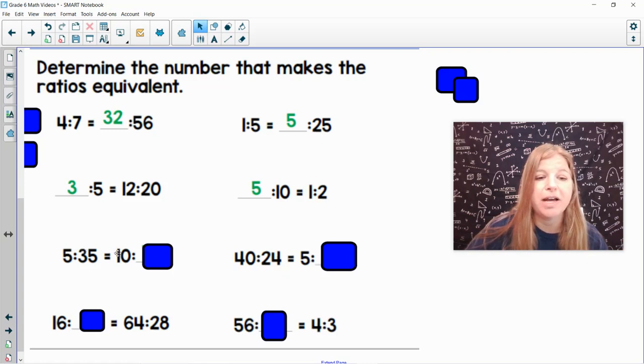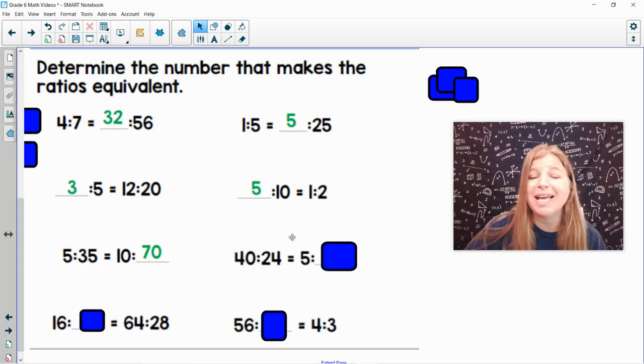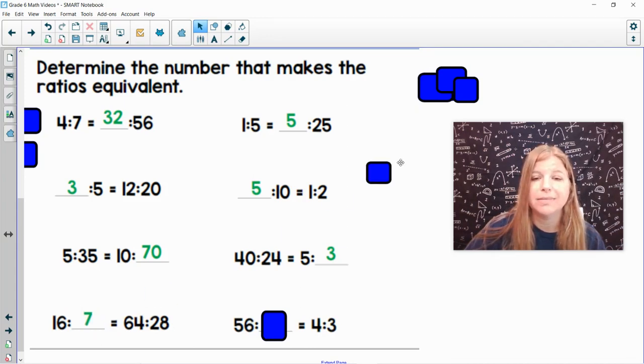5 to 35 equals 10 to blank. 5 times 2 is 10. So 35 times 2 is 70. 40 to 24 equals 5 to what? 40 divided by 8 is 5. So 24 divided by 8 is 3.